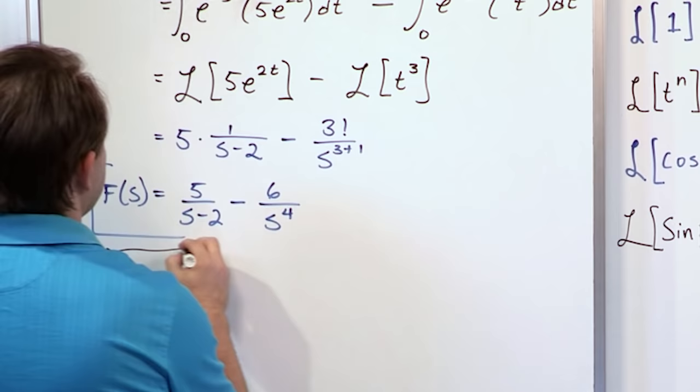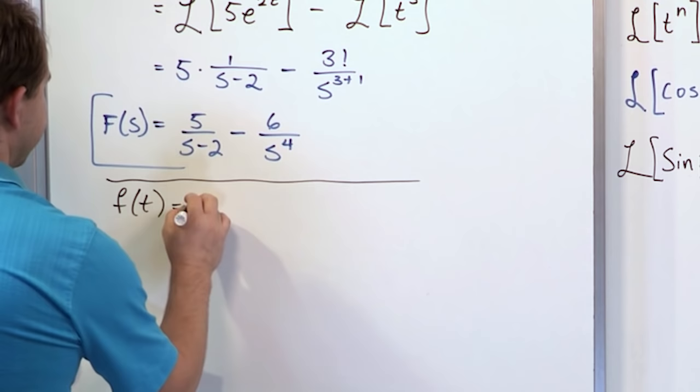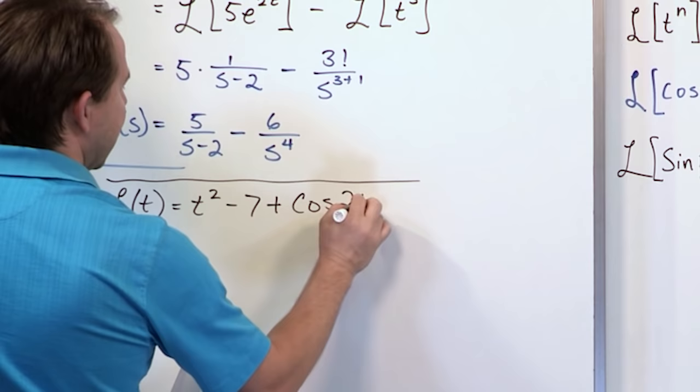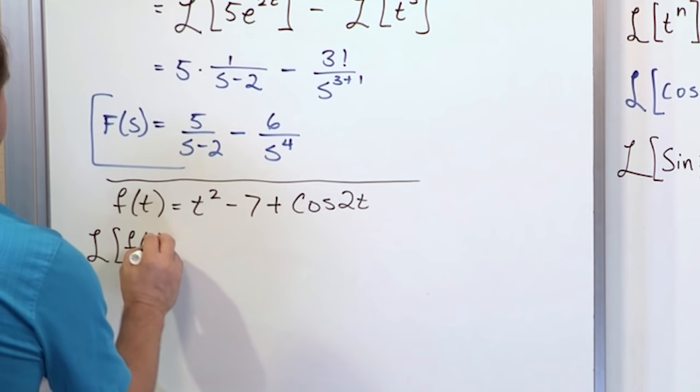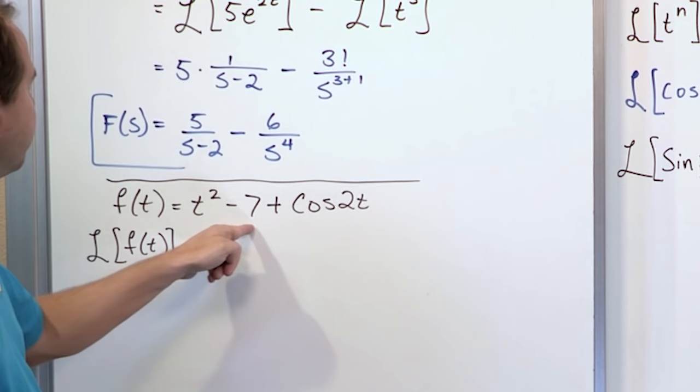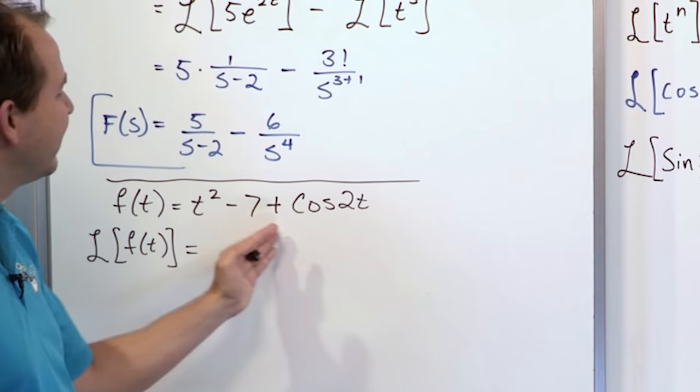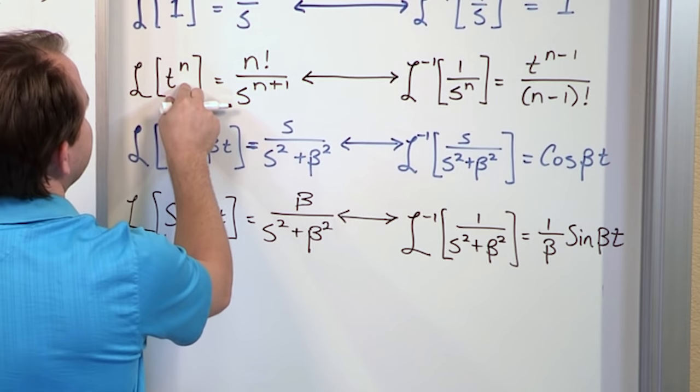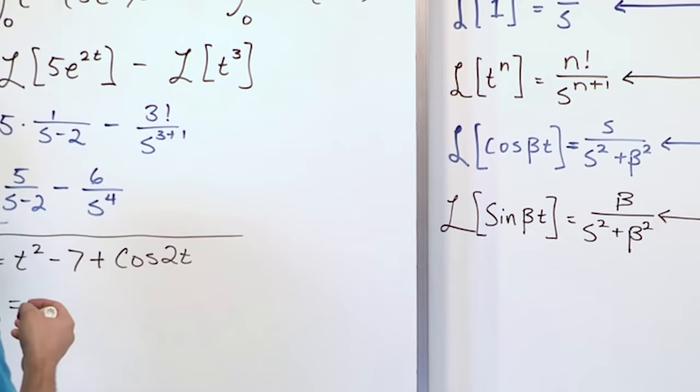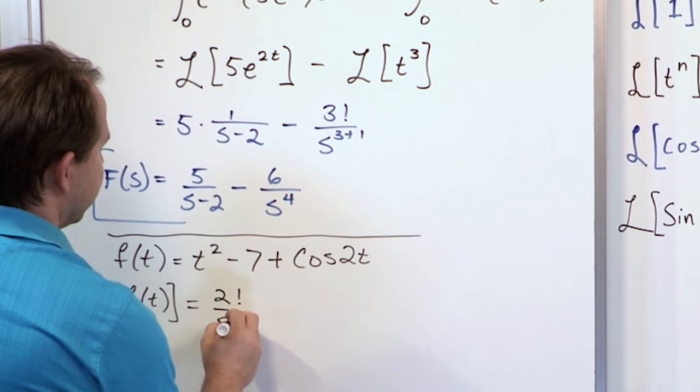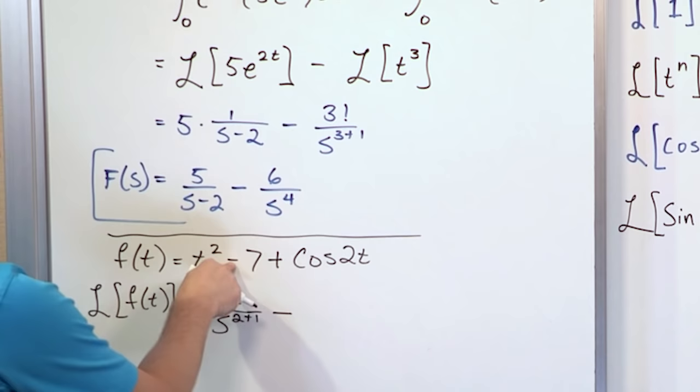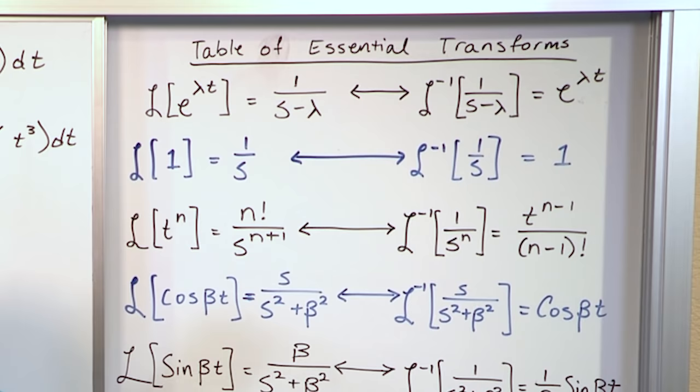So let's go on to the final problem in this lesson. What if I have the function f(t) is t squared minus 7 plus cosine of 2t? How do we take the Laplace transform of this? So we say Laplace transform of f(t) equals... Well, first of all, we have three terms linked by a minus and a plus. But from the linearity, you should now know that we just apply the Laplace transform to each little piece separately, just like we do in integration. The minuses and pluses will just link the answer. So we go and look at t squared. t squared fits this mold, so it'll be 2 factorial over s to the 2 plus 1. So what we're going to write here is 2 factorial over s to the 2 plus 1. That's the first term.